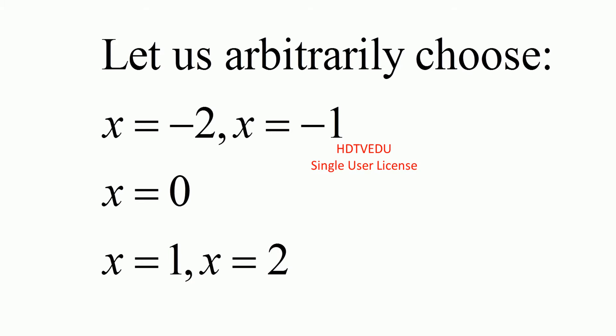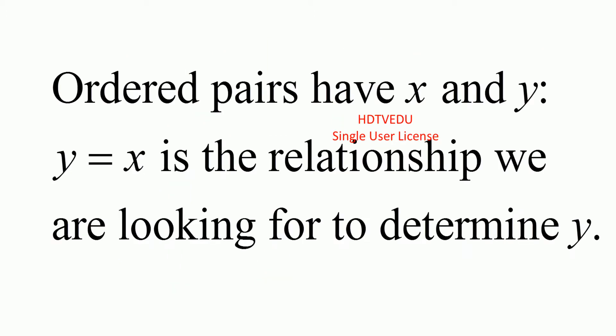So let us choose x equals negative 2, x equals negative 1, x equals 0, x equals 1, and x equals 2. But x by itself is not a point. We need x and y to make an ordered pair. Ordered pairs have x and y. y is equal to x is the relationship we are looking for to determine y.